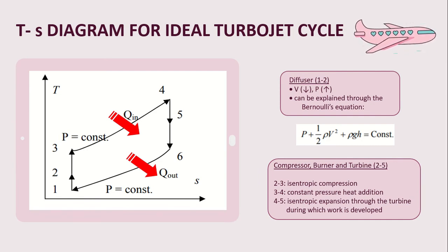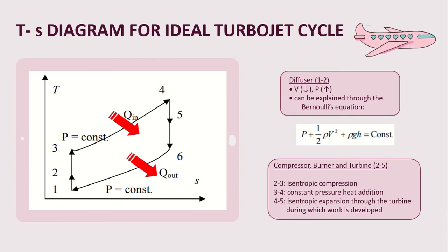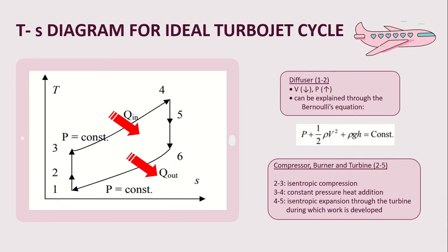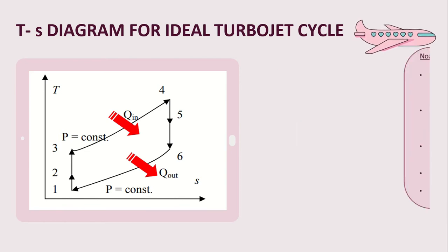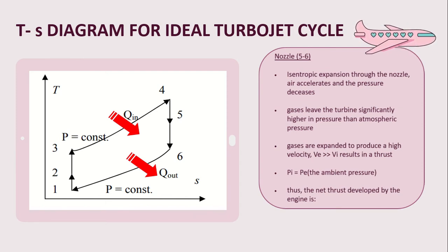From step 2 to 5, it occurs in the compressor, burner, and turbine. From step 2 to 3, it is isentropic compression. From step 3 to 4, it is constant pressure heat addition. From step 4 to 5, it is isentropic expansion through the turbine, during which work is developed. Turbine power is just enough to drive the compressor. Air and fuel are mixed and burned in the combustion chamber at constant pressure. From step 5 to 6, which occurs in the nozzle, isentropic expansion through the nozzle causes air to accelerate and pressure to decrease.